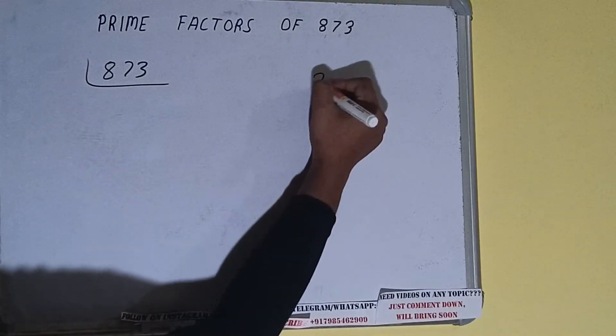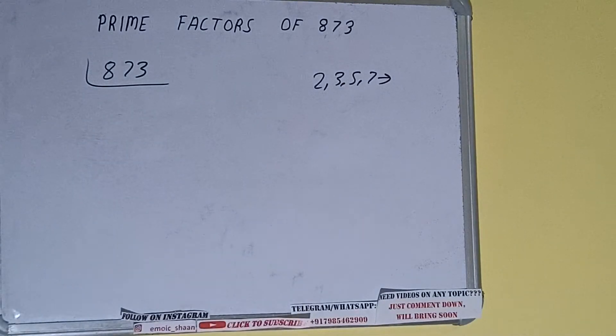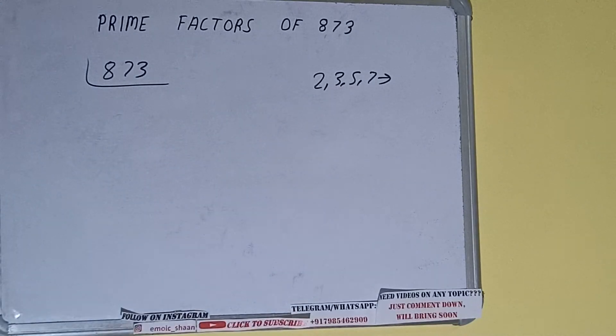All right, so we'll check with the lowest prime number we have, that is two. Is the number 873 divisible by two? No, it is not because the number is odd.